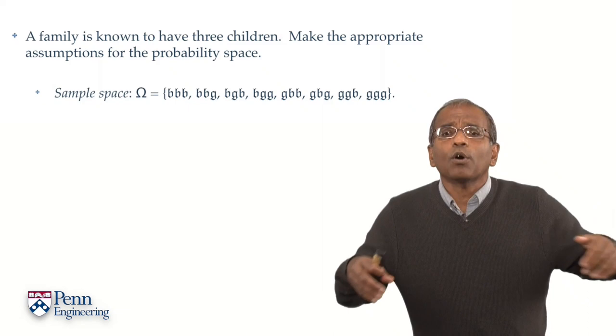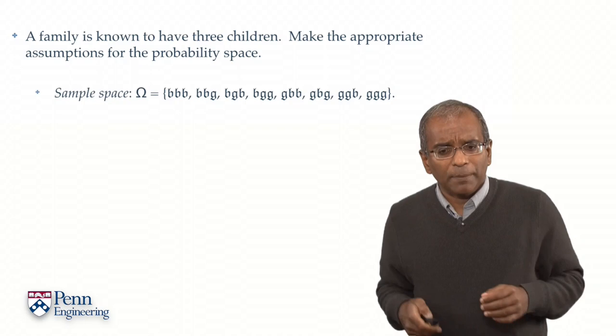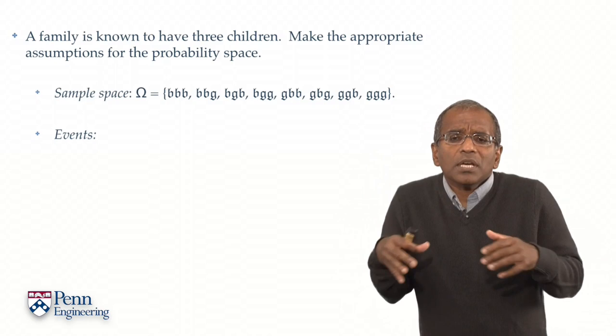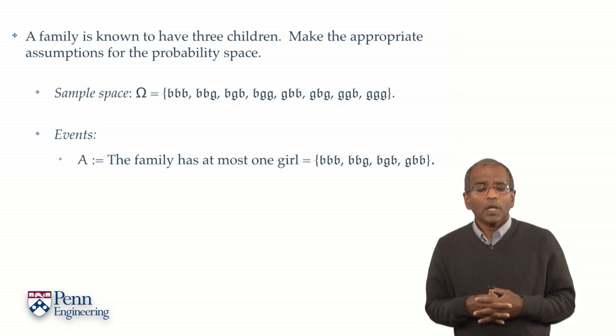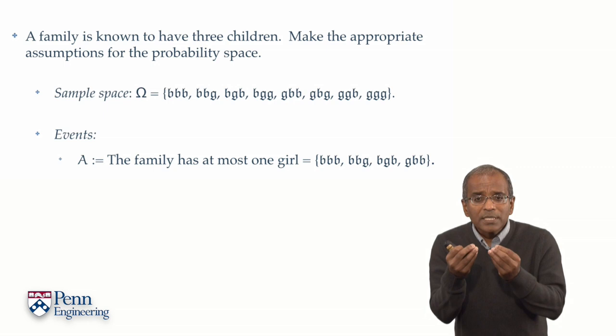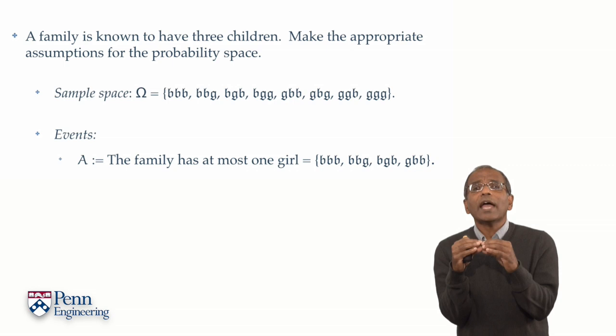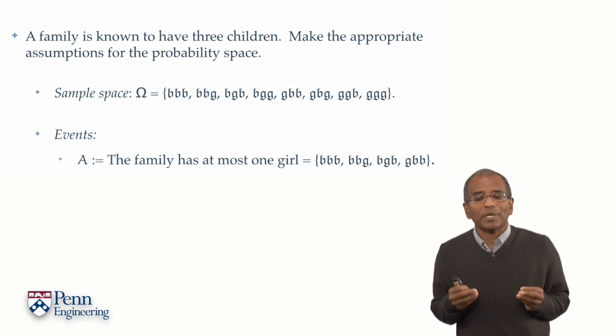Let's put together some events here. These connote nothing of particular interest except they are crafted together to make a point. So let A be the event that the family has at most one girl. What is this event? What subset of sample points is referred to by this event? Well, if it's at most one girl, then you can have at most one g appearing in the string of three letters. And therefore, you have four possibilities. No girls and exactly one girl in various locations, oldest, middle, or youngest.